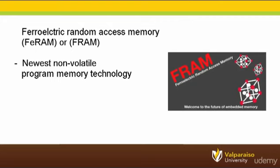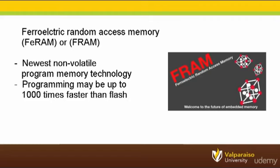The most recent non-volatile program memory developed for microcontrollers is called ferroelectric random access memory, also known as FRAM. FRAM is a non-volatile memory that can hold data after it is powered off. In spite of the name, FRAM is not affected by magnetic fields, as there is no ferrous material — that is, iron — in the chip. Rather, ferroelectric materials switch polarity in an electric field but are not affected by magnetic fields. FRAM has fast write times: the actual write time to an FRAM memory cell is less than 50 nanoseconds — up to a thousand times faster than traditional flash memories.